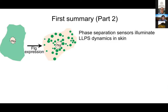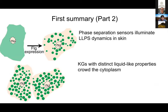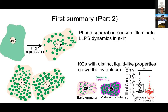To summarize: these phase separation sensor technologies can illuminate intriguing dynamics of phase separation in the skin. Remarkably, it points to the fact that even though these compartments are liquid-like and span a range of viscosities, they can crowd the cytoplasm — which we weren't expecting. We were expecting all these fusion events. We uncovered that keratin networks — intermediate filament networks in the skin — are particularly good at isolating the granules so that they don't fuse.